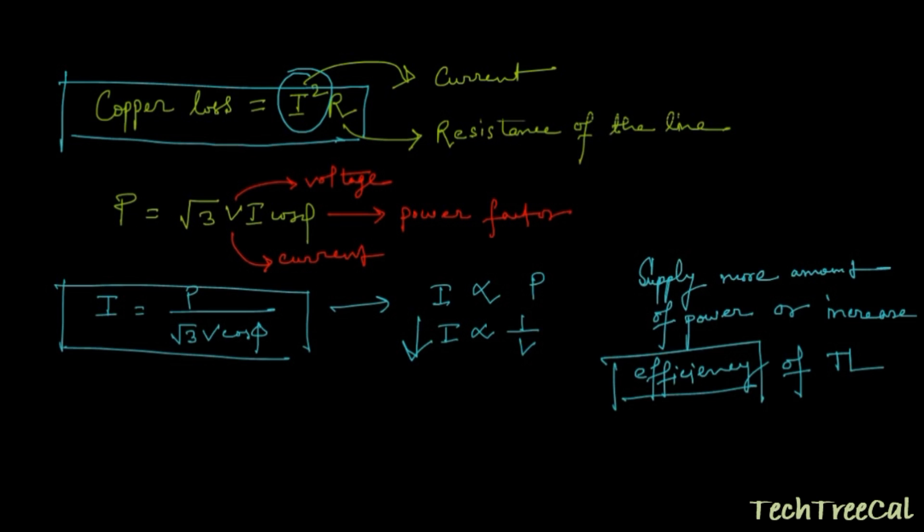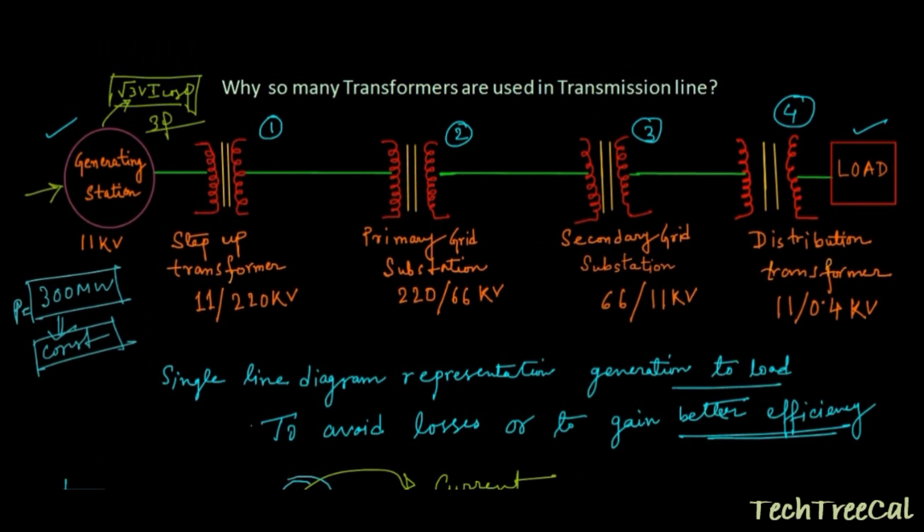This is the reason why so many transformers are used. Basically here, the step-up transformer is increasing the generated voltage 11 kV into 220 kV—that is a huge stepping up of voltages—so that we can decrease the value of the current. Because your power is always the same, it doesn't affect the amount of power being transferred from generating station to load. But as we are increasing the voltage, we are simultaneously decreasing the value of the current I, and we are decreasing the losses.